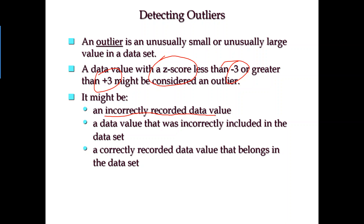A third possibility is that it's a correctly recorded value that belongs to the data set, but the respondent was not truthful — for instance, asking someone their GPA when they may be hesitant to answer honestly. So people lying on their answers can also create outliers. There are many reasons that lead to outliers. Generally, we don't delete data carelessly — we go back to investigate the reason. If it's an unrecoverable mistake and you have a relatively large data set, you may delete it, or use other variables to predict the value for the outlier. Deleting the outlier is not the first choice.